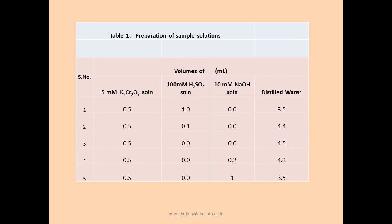In the first two sets, acidity is varied — set one uses 1 ml of 100 mM sulfuric acid, set two uses one-tenth that amount. The third set is kept neutral, expecting a 1:1 ratio of dichromate to chromate. Sets four and five have increasing amounts of alkali added, with set five having approximately five times more alkali than set four. Distilled water is added to bring all solutions to a total volume of 5 ml.